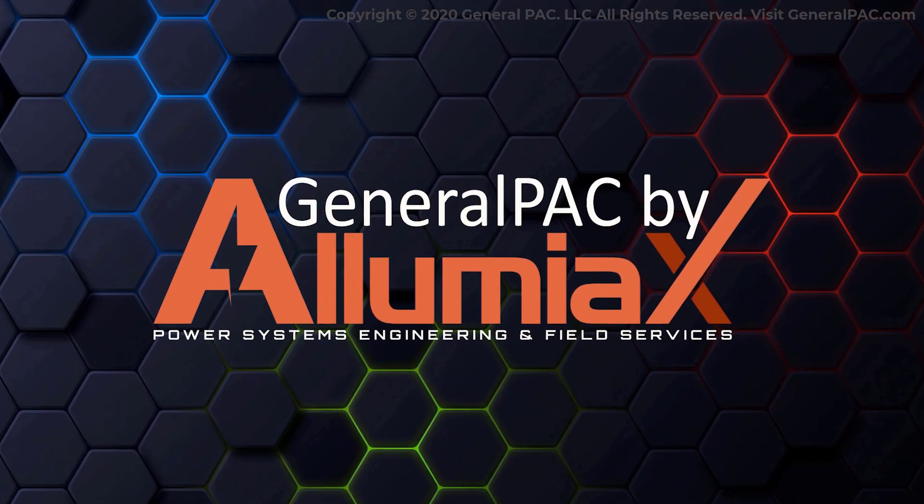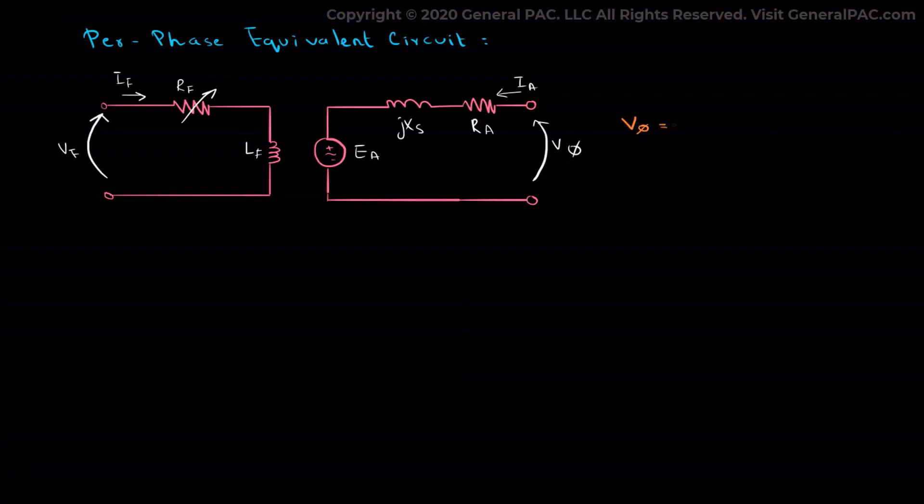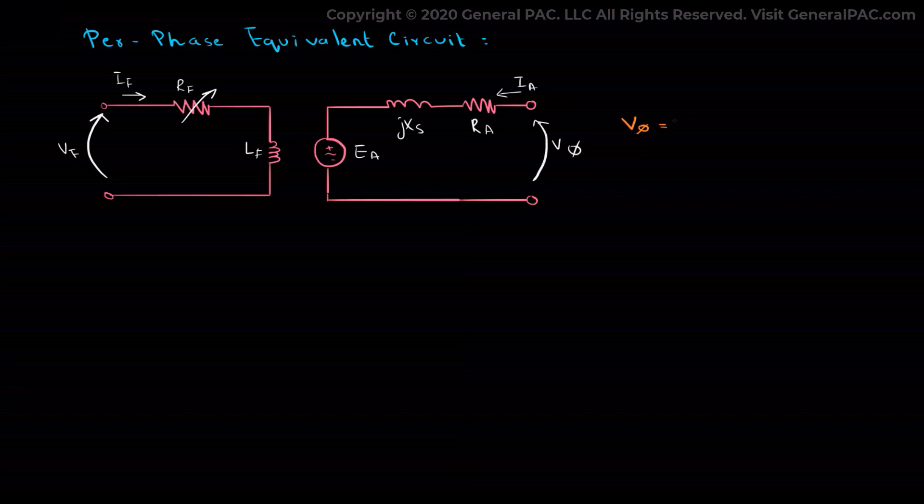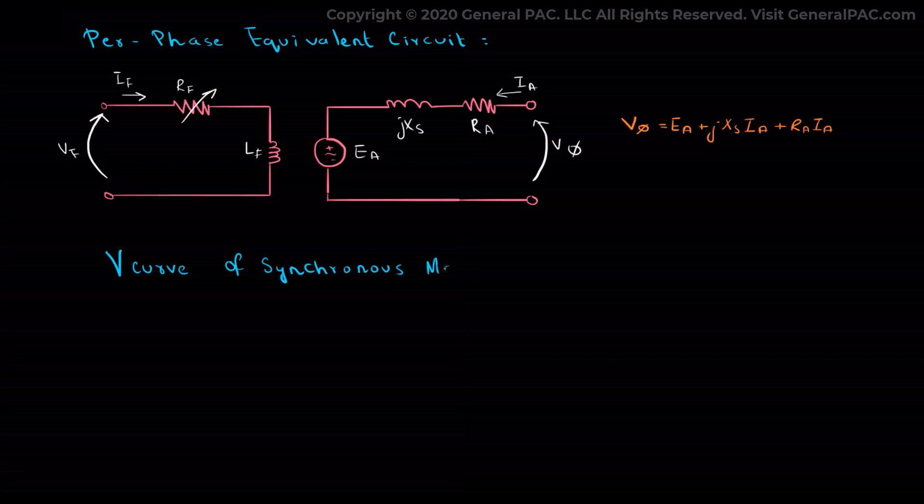The three-phase voltage V_phase at the stator terminal is the sum of the induced EMF Ea and the voltage across the synchronous reactance jXs·Ia and the stator resistance Ra·Ia, which provides us an equation: V_phase = Ea + jXs·Ia + Ra·Ia. Now, to figure out the concept of the synchronous motor excitation, let's have a look at the graph.